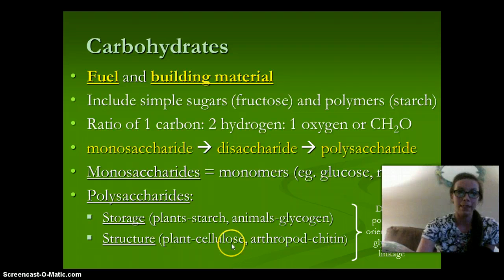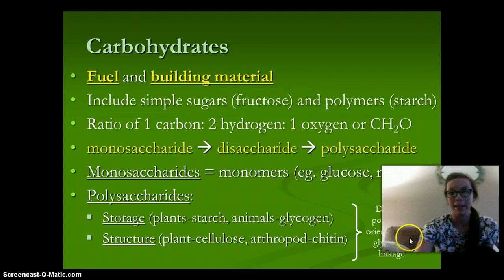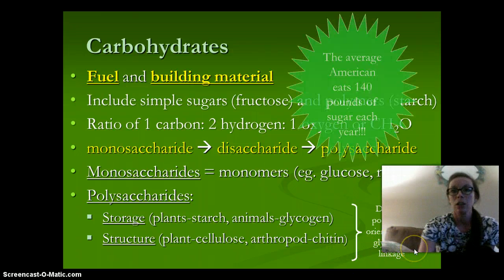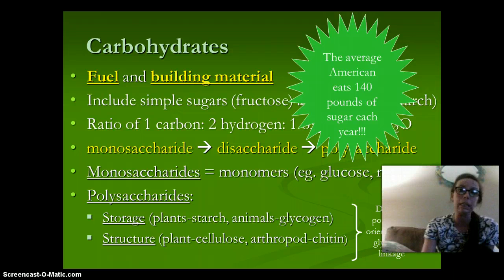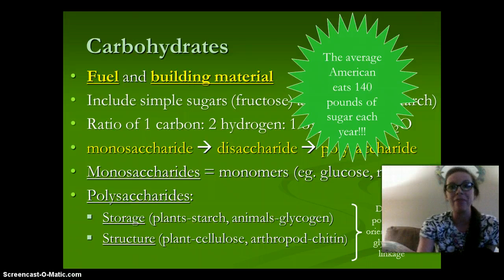Cellulose and chitin provide structure and support to these organisms, and they differ in position and orientation of the glycosidic linkage. The average American eats 140 pounds of sugar a year — a lot of carbohydrate intake. Too much can be a bad thing, but just enough is good for energy.